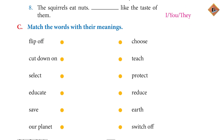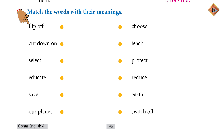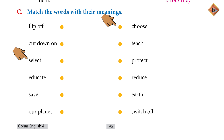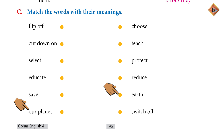Next is Question C — match the words with their meanings. Match the words given below with their meanings. Flip off — switch off. Cut down on — reduce. Select — choose. Educate — teach. Save — protect. Our planet — Earth.